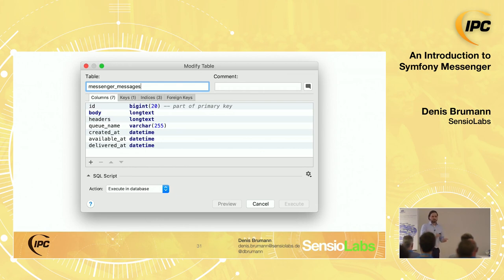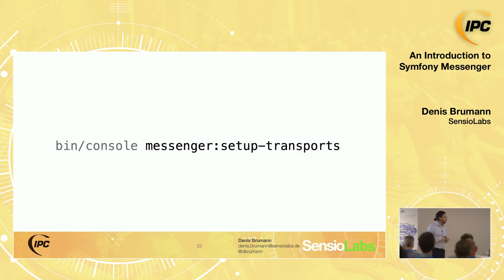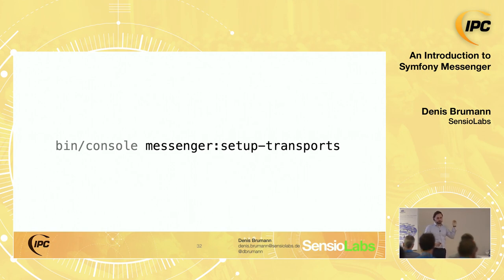The Doctrine transport creates a table in your database where all messages are stored. The table contains the serialized message body, headers with additional information, a queue name column so you can filter by queue, and timestamp fields. This allows you to send messages away and handle them at a later point by reading from whichever transport the message is stored in.